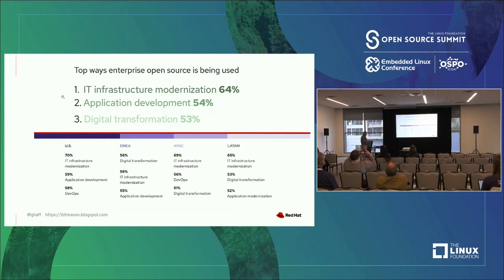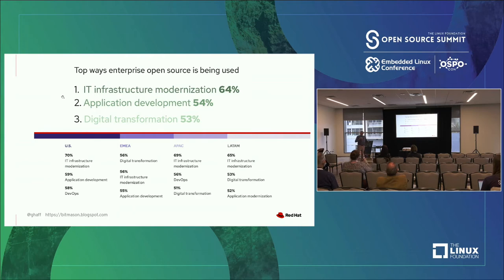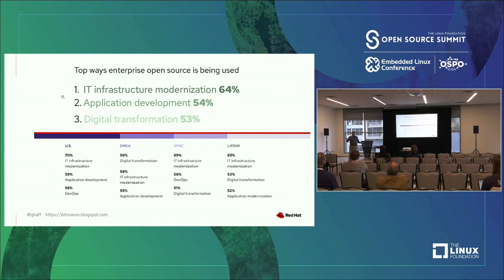These surveys are conducted across geographies. Often the most interesting geographic result is that there's less difference than you might expect — most answers are fairly universal in roughly the same numbers. Looking at the data, DevOps, digital transformation, application modernization, and application development are almost a language thing. They're all connected — you can't digitally transform without developing new applications.